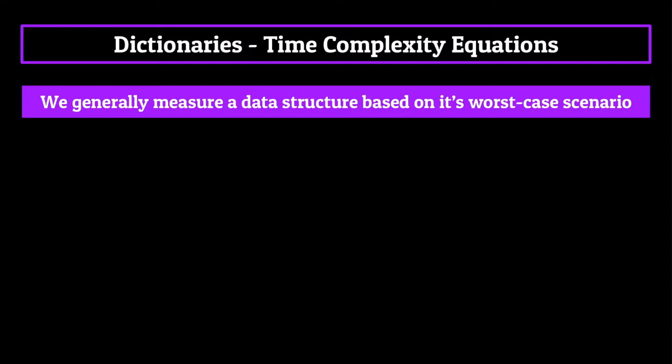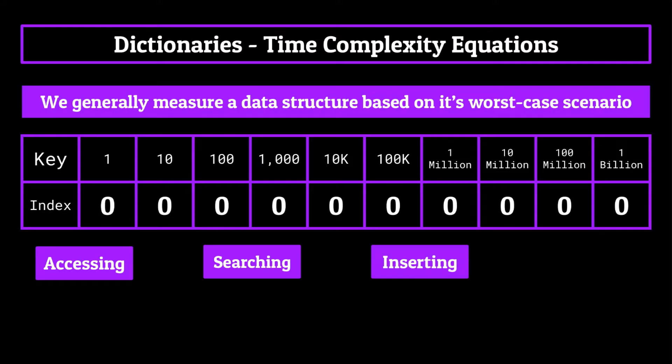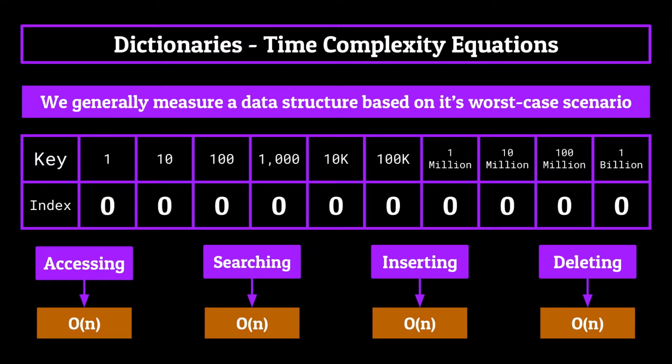But when it comes to dictionaries, if we are to assume the worst case scenario, we end up assuming that our hash function makes it so that every key value pair ends up at the same index, meaning each of our keys gets stored in a linked list. And then worst case scenario, we have to assume that every operation functions how it would for accessing, searching for, inserting, or deleting from a linked list, which if you remember is O of n for all four. This of course is preposterous and would probably never happen with a bare minimum decent hash function.